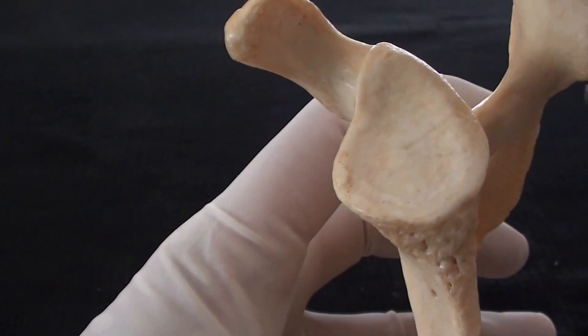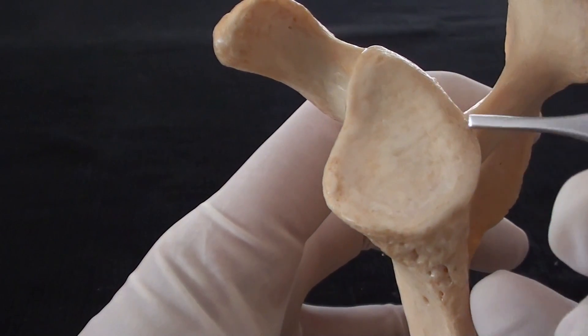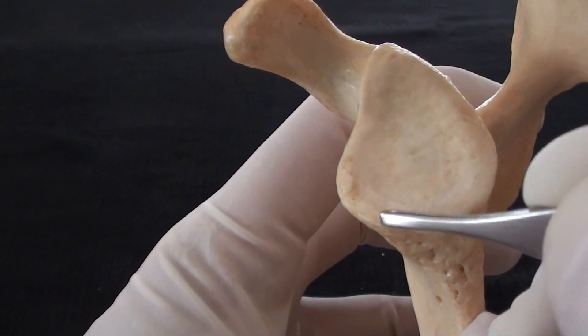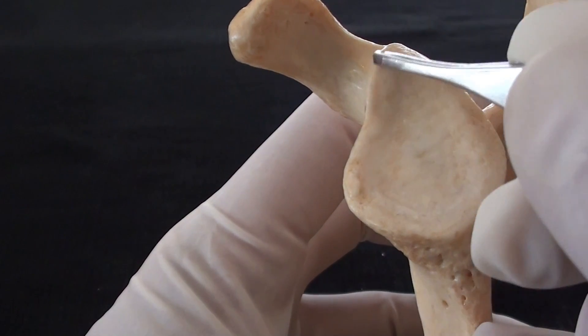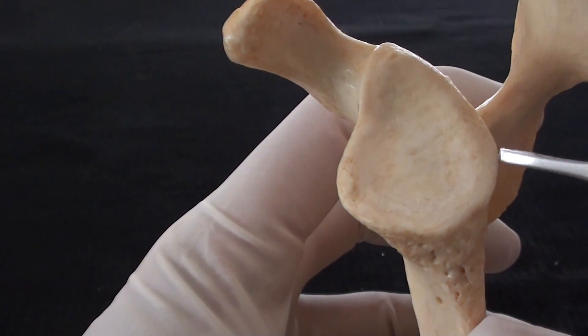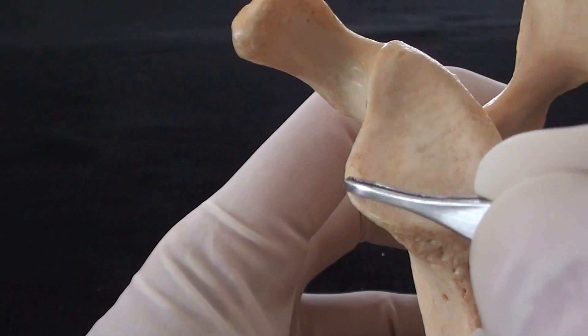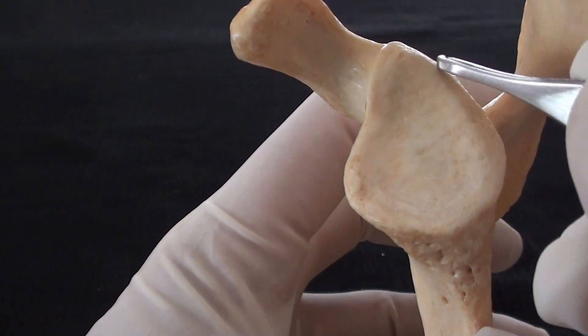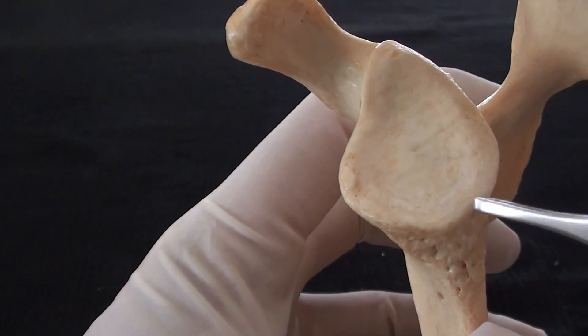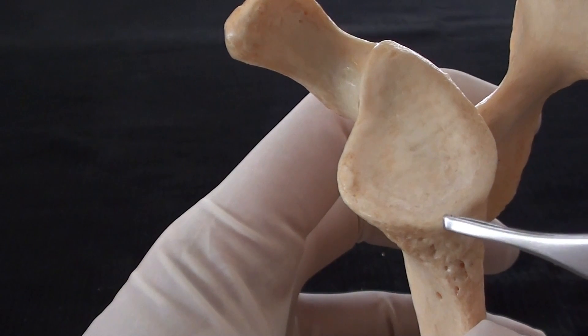In a living person it will be additionally enlarged and made wider and also made more concave by attachment of fibrocartilaginous ring all around its peripheral margins. The name of that ring is glenoid labrum.